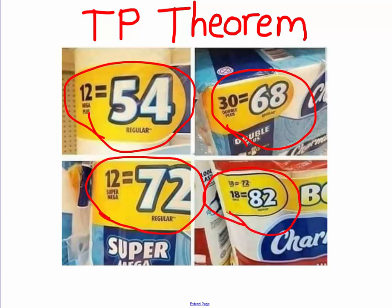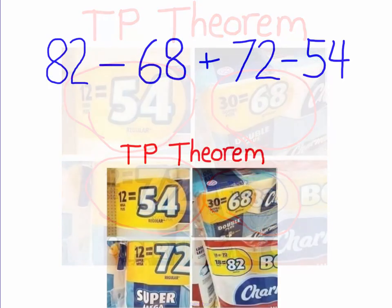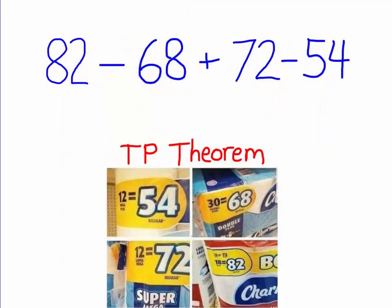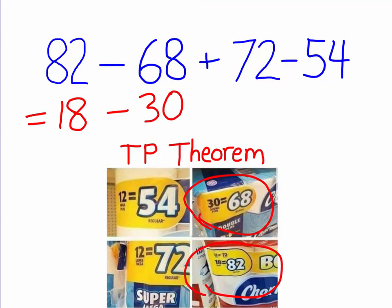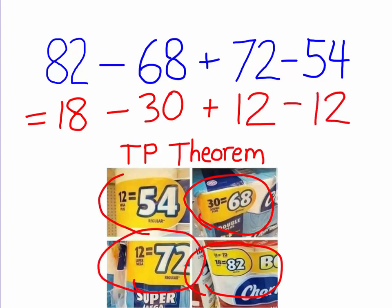Let's put this to use. Okay, back to our problem. Let's see, 82 is equal to 18, 68 is equal to 30, 72 is equal to 12, and 54 is also equal to 12.